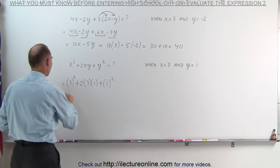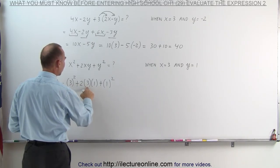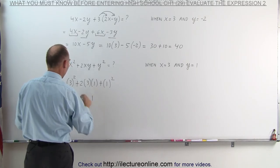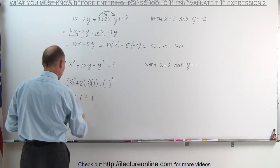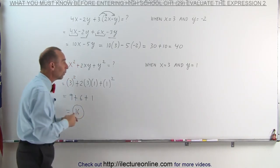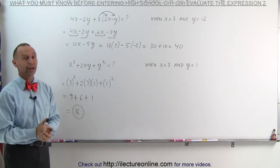Now we're going to simplify this. 3 squared is 9 plus 2 times 3 is 6 times 1 is 6 plus 1 squared is 1. Adding all together, that would be 16 and that would be the expression evaluated when x equals 3 and y equals 1, and that's how we do that.